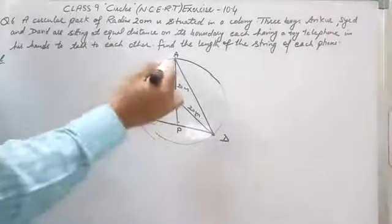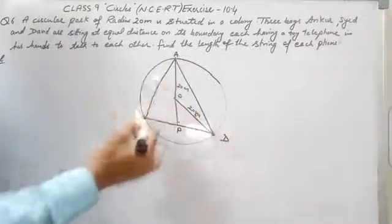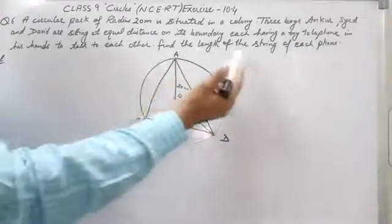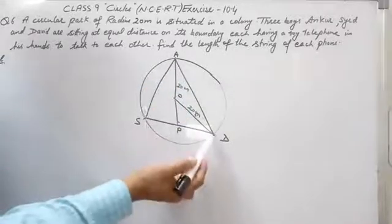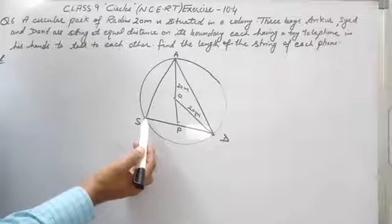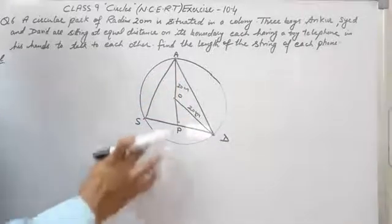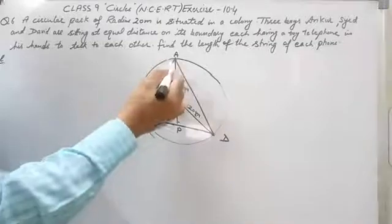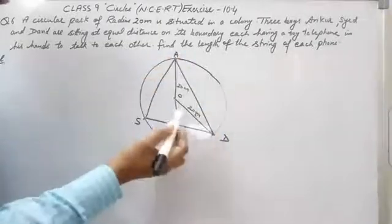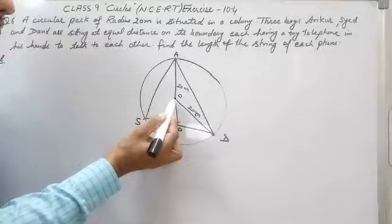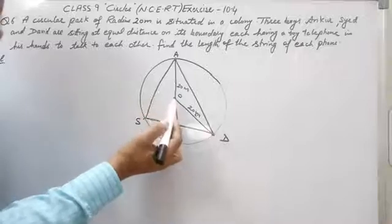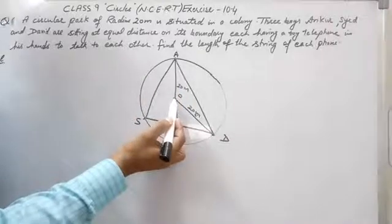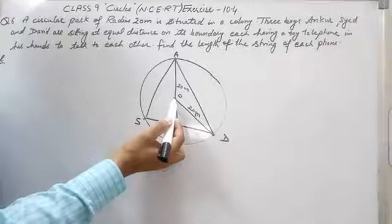ASD is an equilateral triangle because AS equals SD equals AD. We need to find the length of each string — that is, AS, SD, or AD. In an equilateral triangle, the centroid, orthocenter, and circumcenter all coincide.